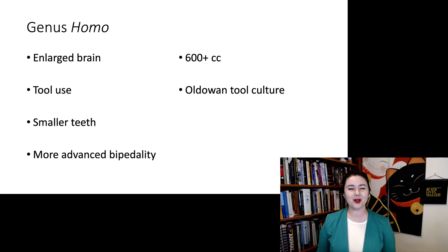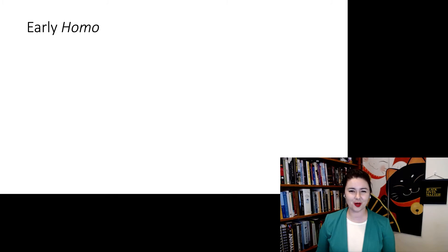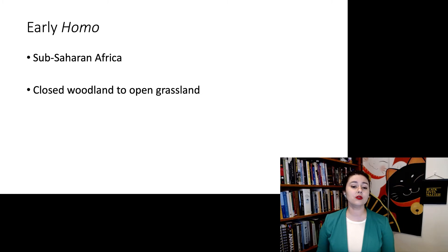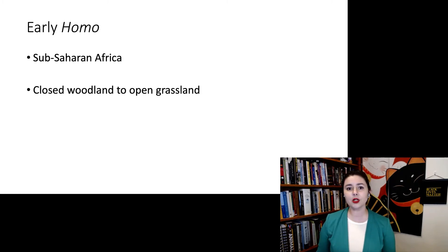So let's talk about some of these early Homo species. Generally, we're finding them in sub-Saharan Africa in enclosed woodland to open grassland environments — so a little bit open, but still some trees.